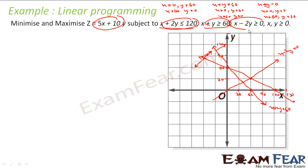Now this constraint is also done. To check which side: since (0, 0) lies on the line itself, take x = 30, y = 0. Then 30 - 0 = 30 which is greater than 0, yes. So this point satisfies x - 2y > 0, meaning the feasible region for this constraint is on that side.